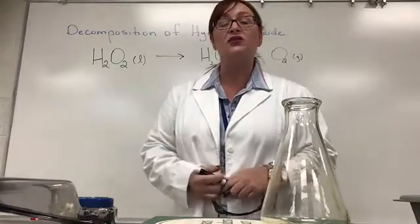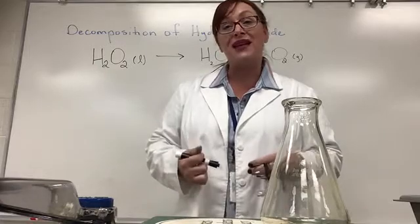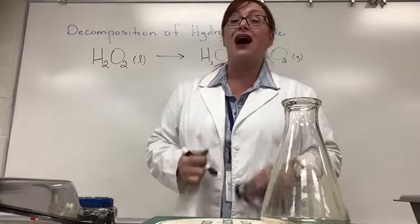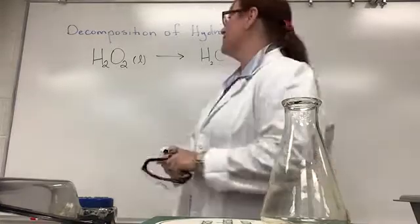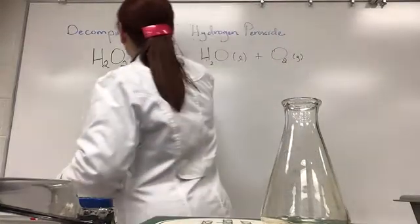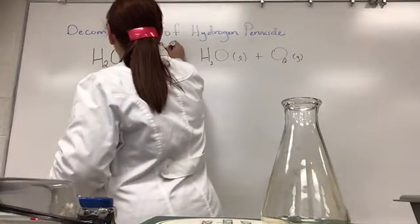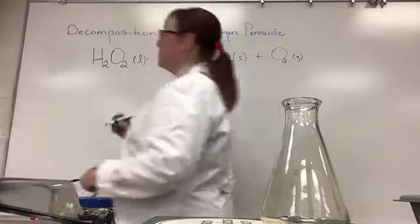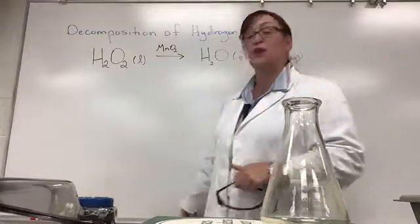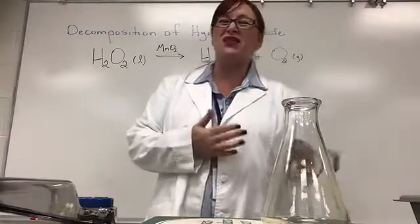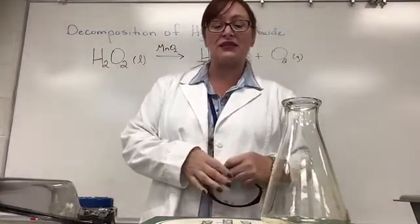The catalyst we're going to use in this example is manganese 4 oxide, or sometimes it's called manganese dioxide. And so we're going to write our catalyst over the top of our arrow. That's where you always want to show a catalyst because it doesn't end up as one of the products, and it really is only temporarily one of the reactants.